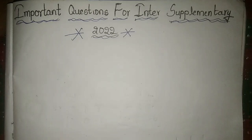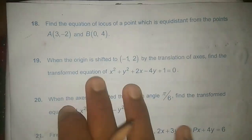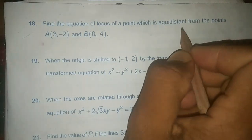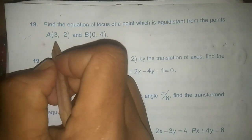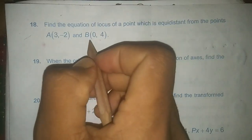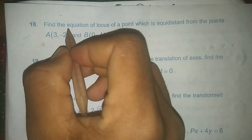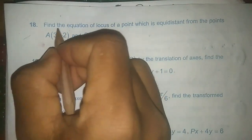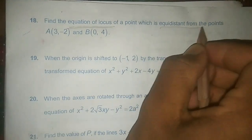Problem 18: Find the equation of the locus of a point which is equidistant from points A = (3, -2) and B = (0, 4). We have to understand what is given and what we have to find — we need the equation of the locus equidistant from A and B. This type of problem will definitely come in the exam.